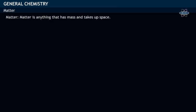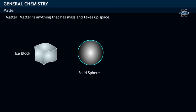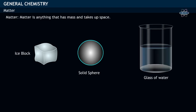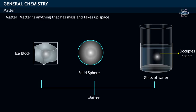Matter is anything which occupies space. For example, an ice block, a solid sphere, and a glass of water occupies space, and hence they are considered as matter.